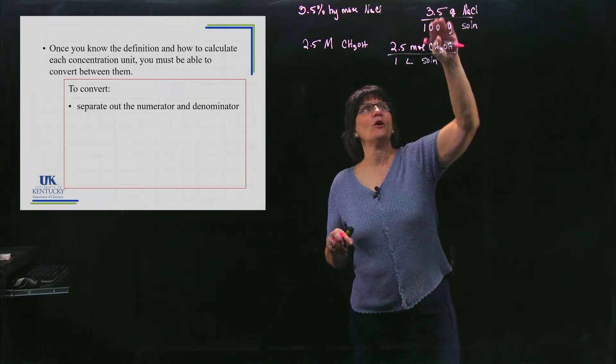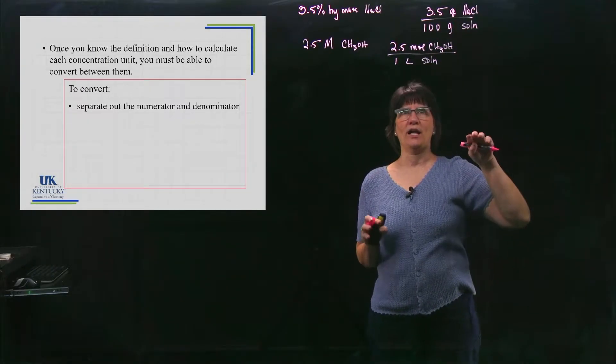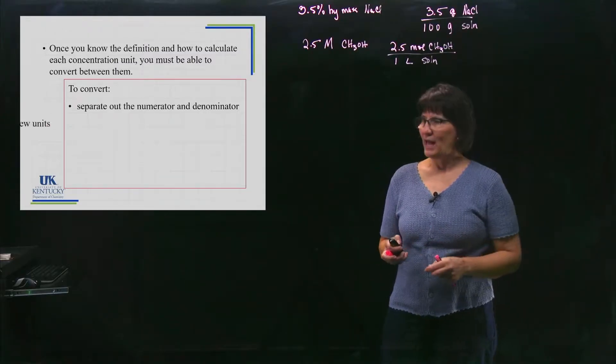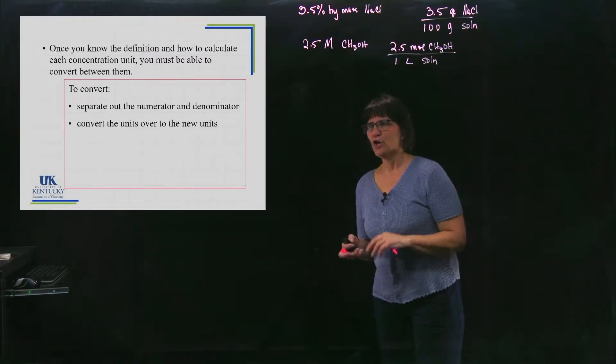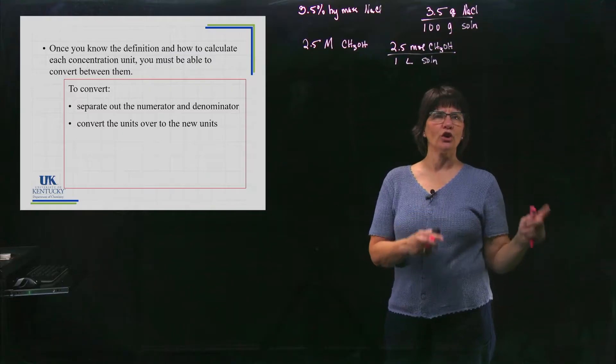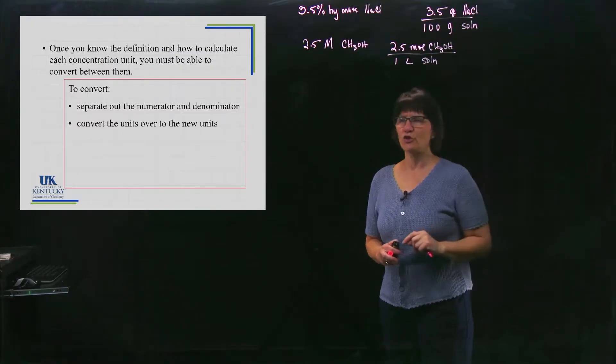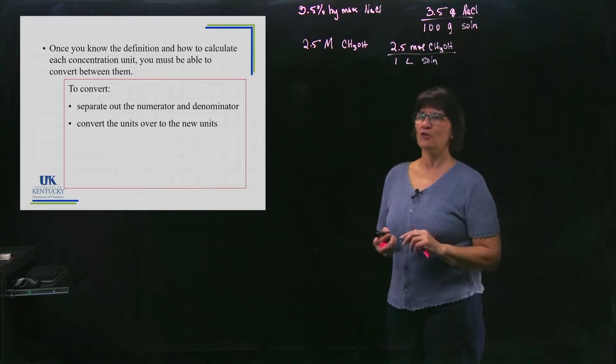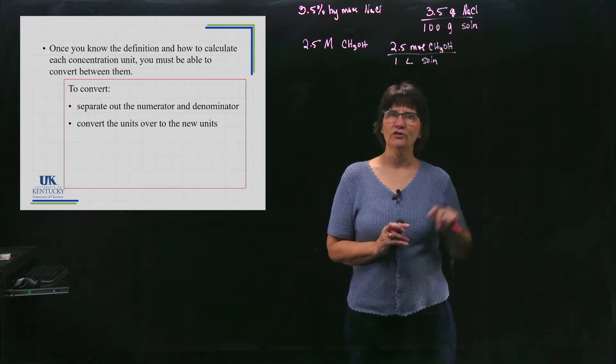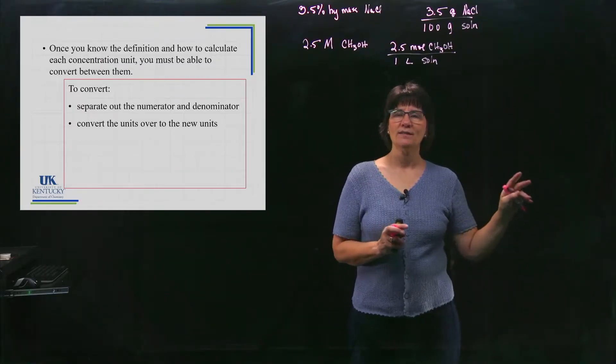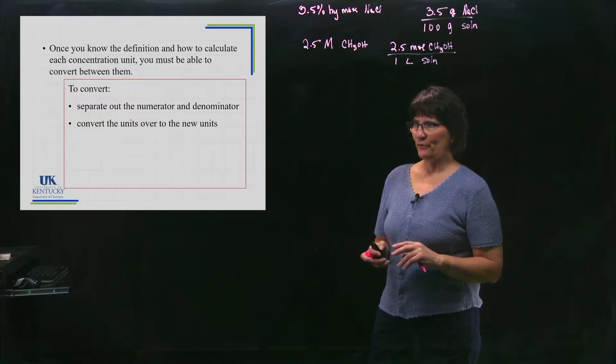So you're going to separate the numerator and the denominator and then you're going to really separate it. Just work with the numerator and just work with the denominator to convert over to the new units you're looking for in the concentration unit you're trying to obtain. So you're going to work numerator, where does it need to go? Denominator, where does it need to go? And then put them back together again.